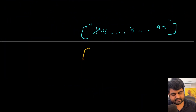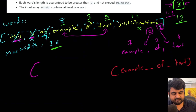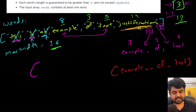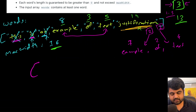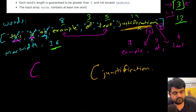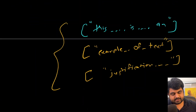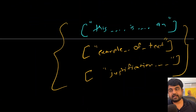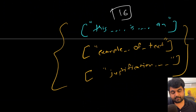For the last line, we only have the word 'justification' which contains 14 characters. Since it is the last line, it is left justified — we simply append trailing spaces to reach 16 characters. That gives us our final three strings as the complete answer.